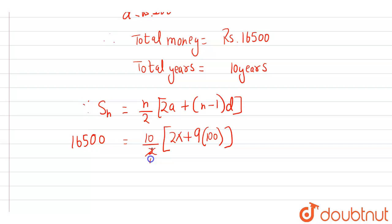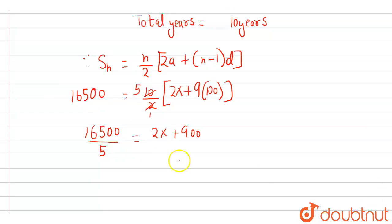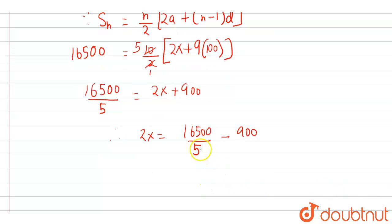Simplifying 16,500 divided by 5, and shifting 900 to the left side where it becomes negative, we get: 2x = 16,500/5 - 900.